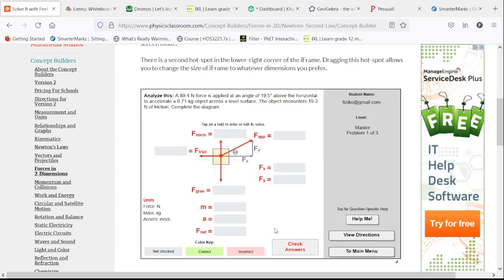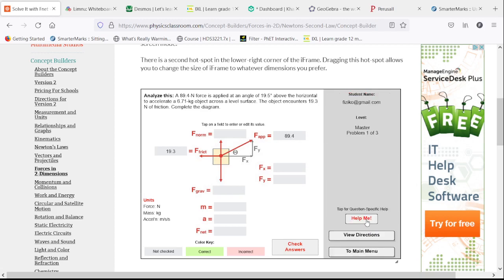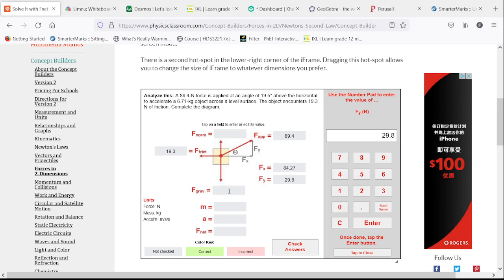We'll now take a look at the master level. Here, they're just adding friction, but we don't have to calculate the friction, they gave it to us. It's 19.3 newtons. Our applied force is 89.4 newtons at an angle of 19.5 degrees. The horizontal component is very similar; it's the vertical component that will look quite different. Our force of gravity is 6.71 times 9.81, so that is 65.8.